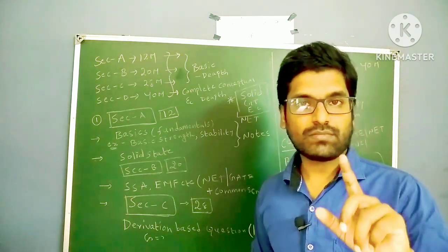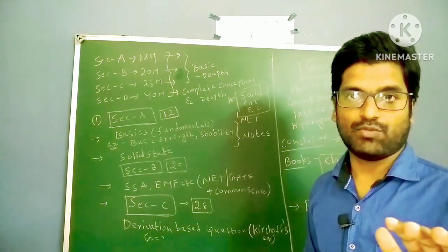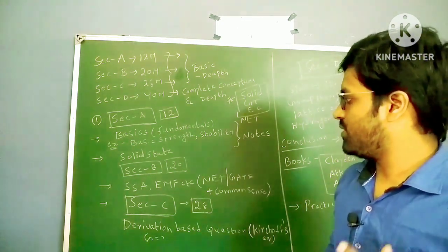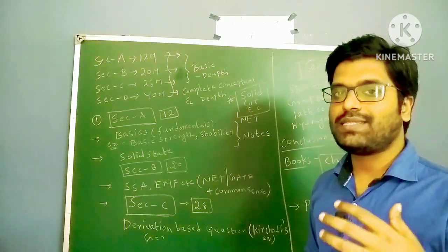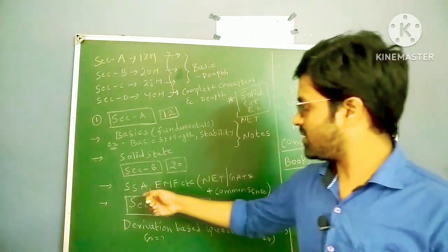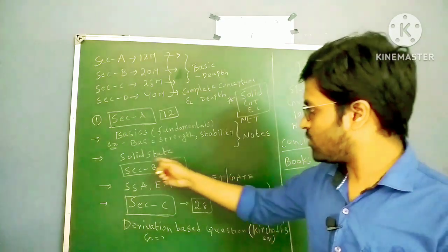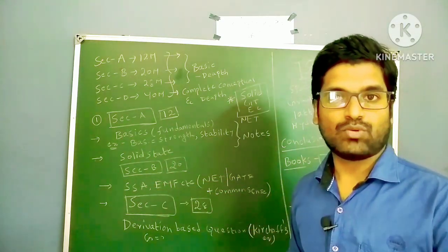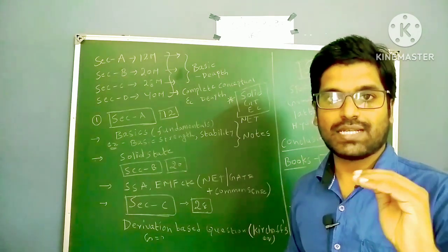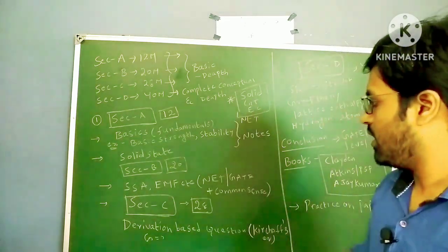To summarize Section A: your CSIR NET and GATE notes are more than enough if you utilize them efficiently. You don't need standard books for Section A given the limited time. Now for Section B — questions on solid state, group theory, and electrochemistry continue to appear, so don't skip those chapters. Section B is also somewhat basic level; for topics like steady-state approximation and EMF (electromotive force), the level is not very deep.